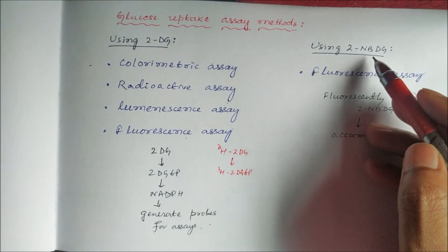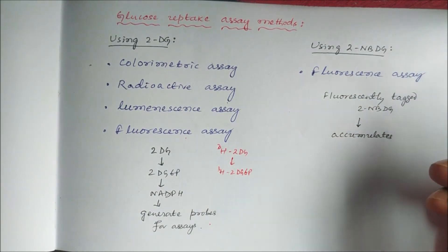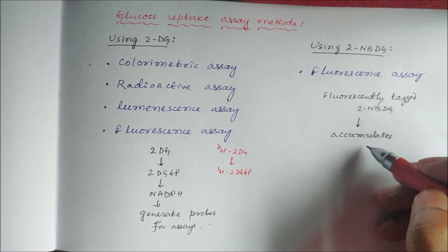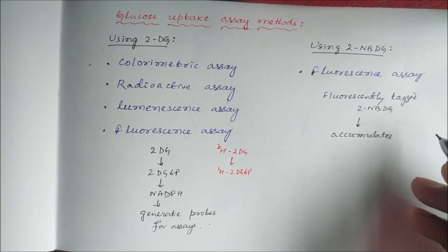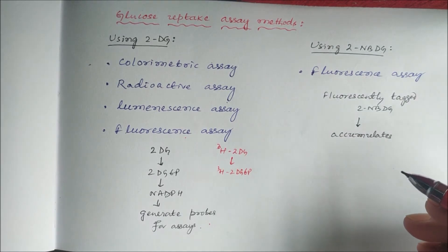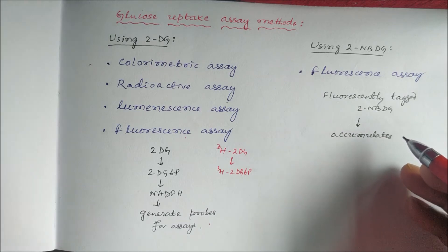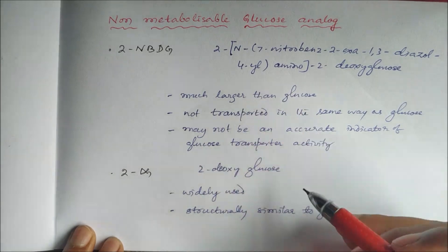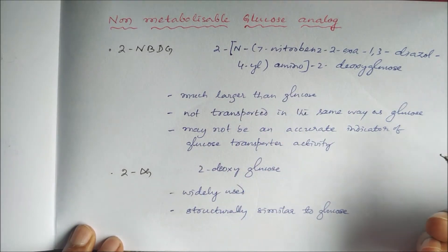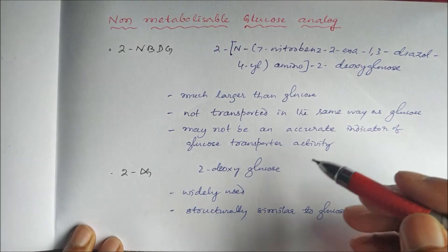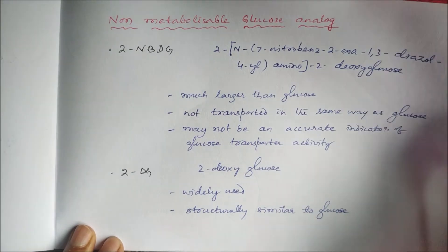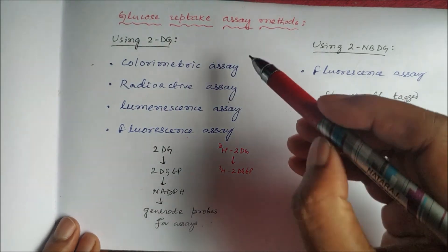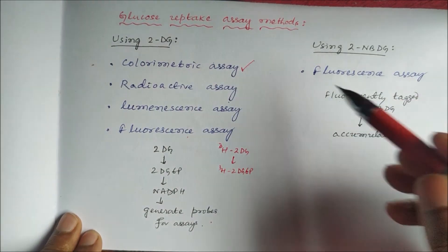Using 2-NBDG, a fluorescence assay method is used where fluorescently tagged 2-NBDG accumulates inside the cell. However, the major disadvantage of this method is that due to the larger molecular size of 2-NBDG, it is not transported in the same way as glucose and therefore may not be an accurate indicator of glucose transport activity. So this method can be ruled out.